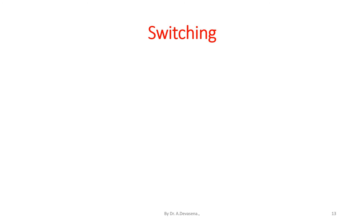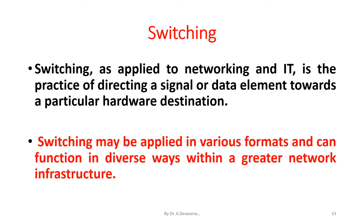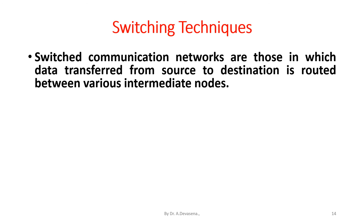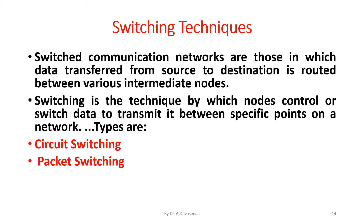Switching, as applied to networking and IT, is the practice of directing a signal or data element towards a particular hardware destination. Switched communication networks are those in which data transferred from source to destination is routed between various intermediate nodes. Switching is the technique by which nodes control or switch data to transmit it between specific points on a network. The types of switching are circuit switching, packet switching, and message switching.